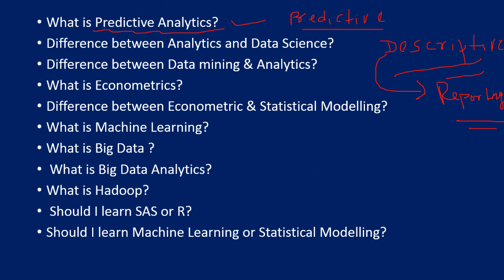What is the difference between analytics and data science? The word data science is very new. It was used for the first time in 1999 in a presentation at the University of Michigan, and it has gained popularity in the last four or five years. There is no strict definition of data science. It is not a formal academic discipline yet. It is a combination of statistics, computer science, operations research, economics, econometrics, psychometrics, and so on — fields that deal with a lot of data.